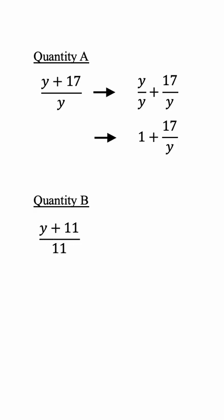For quantity B we can do the same thing. We have y plus 11 divided by 11, so we can separate the fractions and have y over 11 plus 11 over 11. By simplification we have 1 plus y over 11.